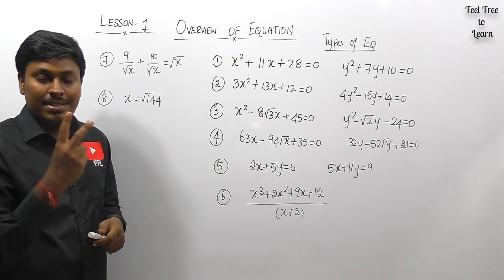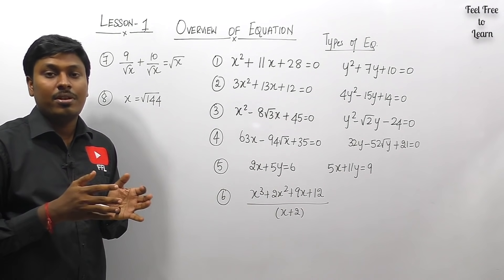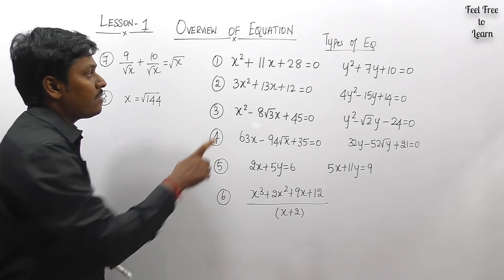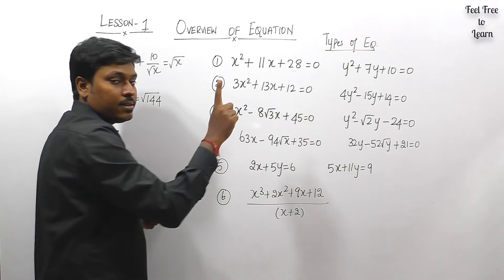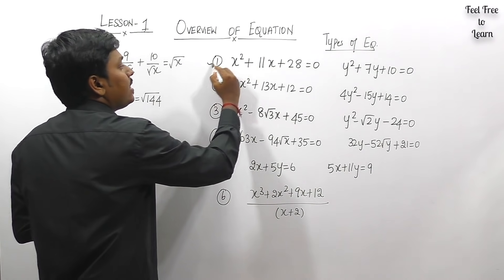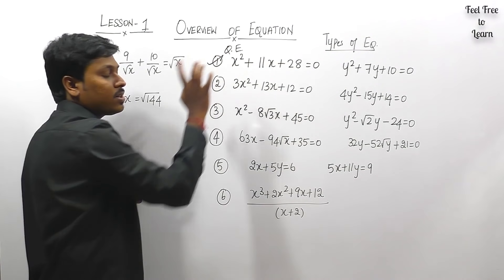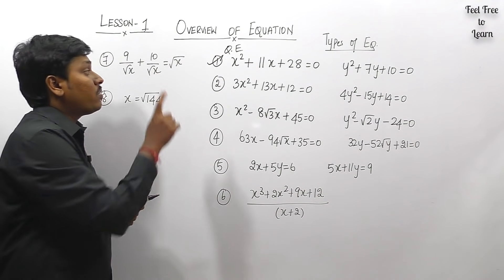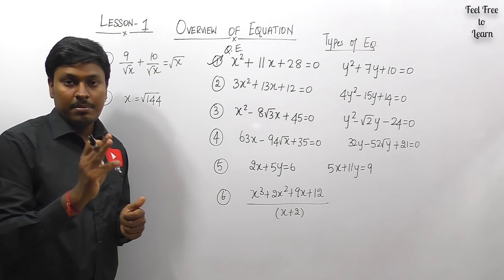By seeing this equation, you need to determine whether it is linear, simultaneous, or quadratic — this is important because each type of equation must be solved by a different method. If an equation contains x², x, and a constant, it is definitely a quadratic equation. Here x² + x + constant is a quadratic equation, and y² + y + constant is also a quadratic equation. So both equations in question one are quadratic equations. We solved eight different questions on this type in lesson two.